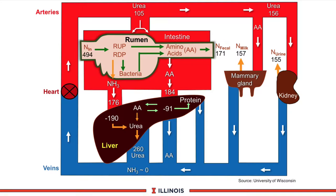There won't be any exam questions from this slide, but this is what the cow does with nitrogen as it comes in — determining whether it ends up in milk, in urine, or into tissue. It gives you all the numbers and an idea of the rates and amounts in circulation of the dairy cow.